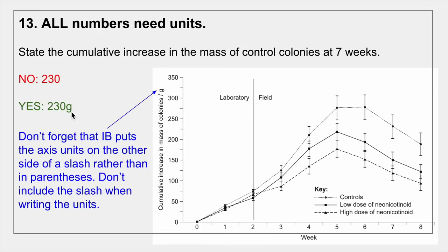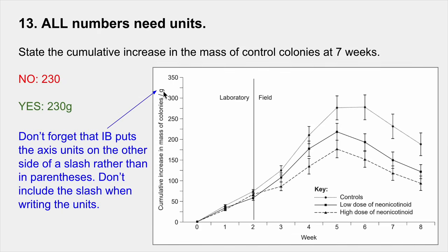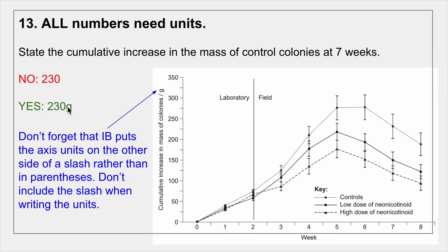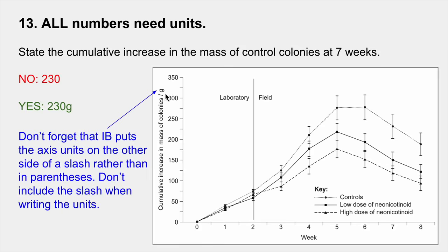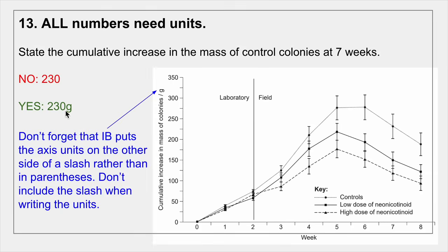But if you just state 230 you'll get zero marks — you must include the unit. IB puts their units on the other side of a slash; we often put units in parentheses. Don't be confused by the slash and don't write the slash in your answer. I've seen students write '230/g' because they misinterpret it. All it does is separate the axis title from the units, so just write the units next to the number.